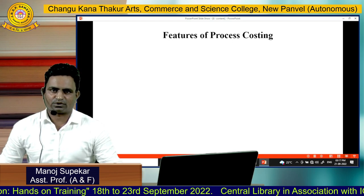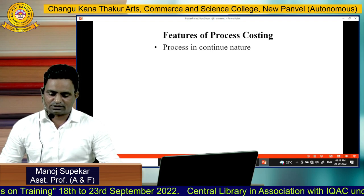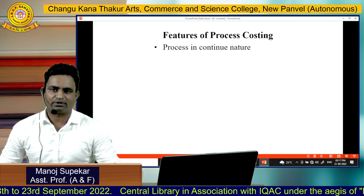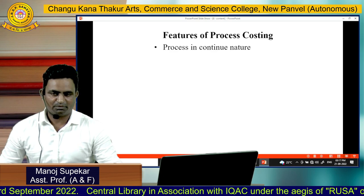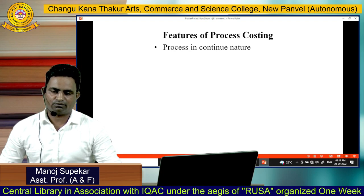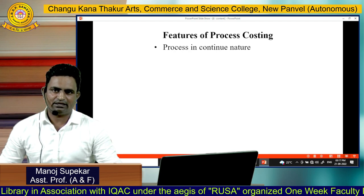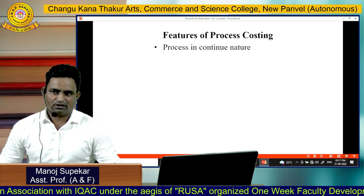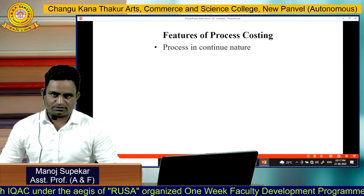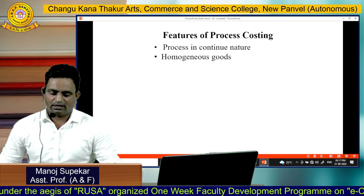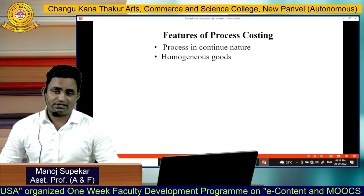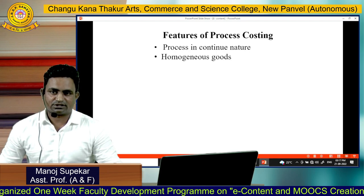Now, what are the features of process costing? The first important feature is that the process is continuous in nature. The main motive of process costing is to find out the cost of each process for goods manufactured. The second important feature is that process costing is applicable only for homogeneous goods.